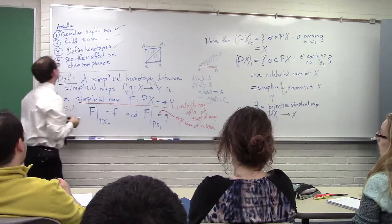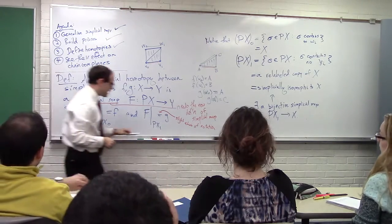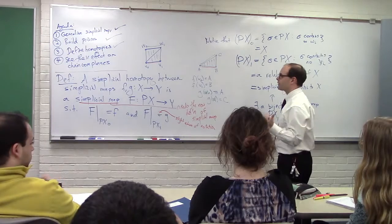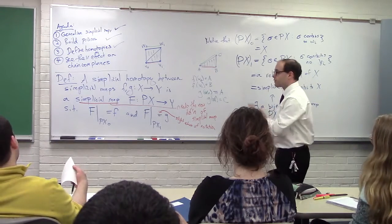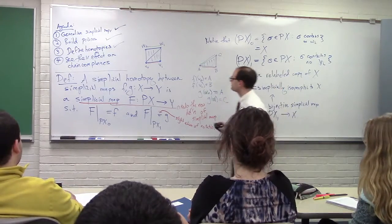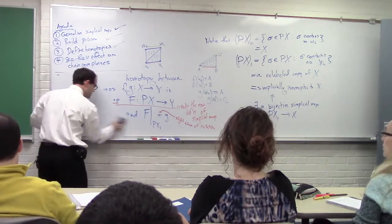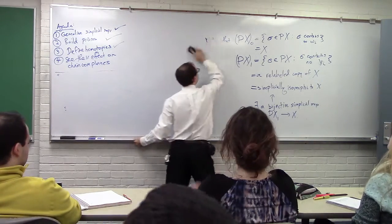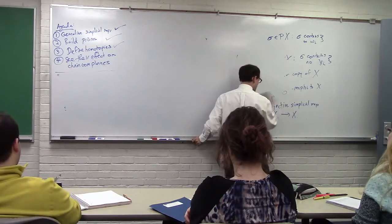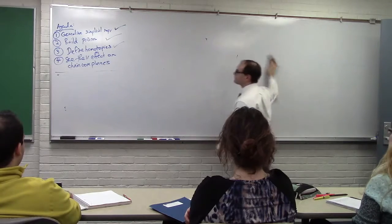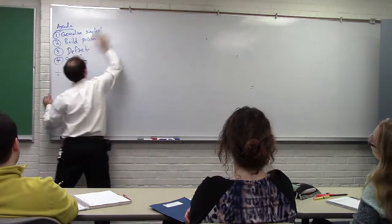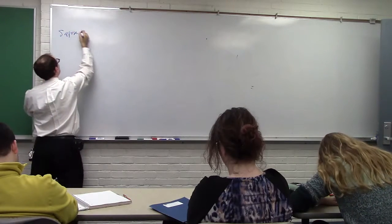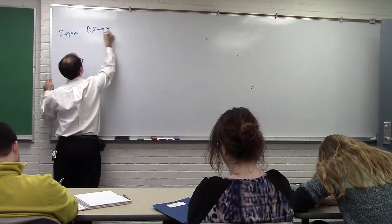So sending something through f versus g is equivalent to sending it through P(X)_0 versus P(X)_1. And we use v's and w's to index the top and the bottom.